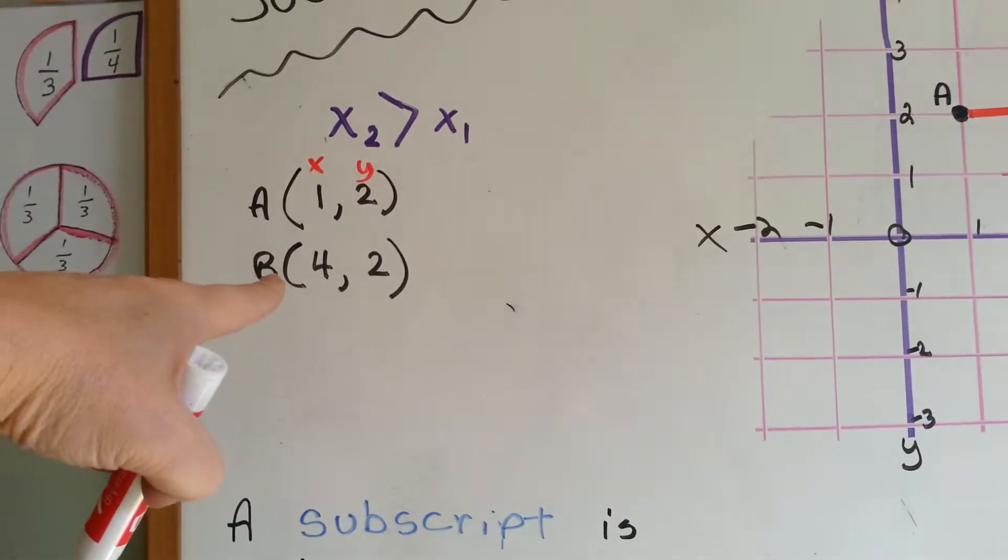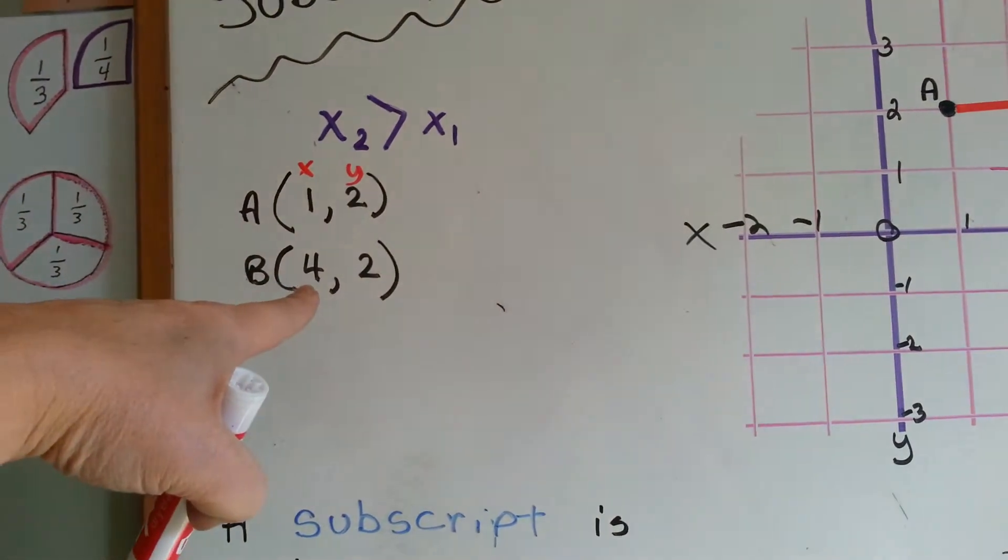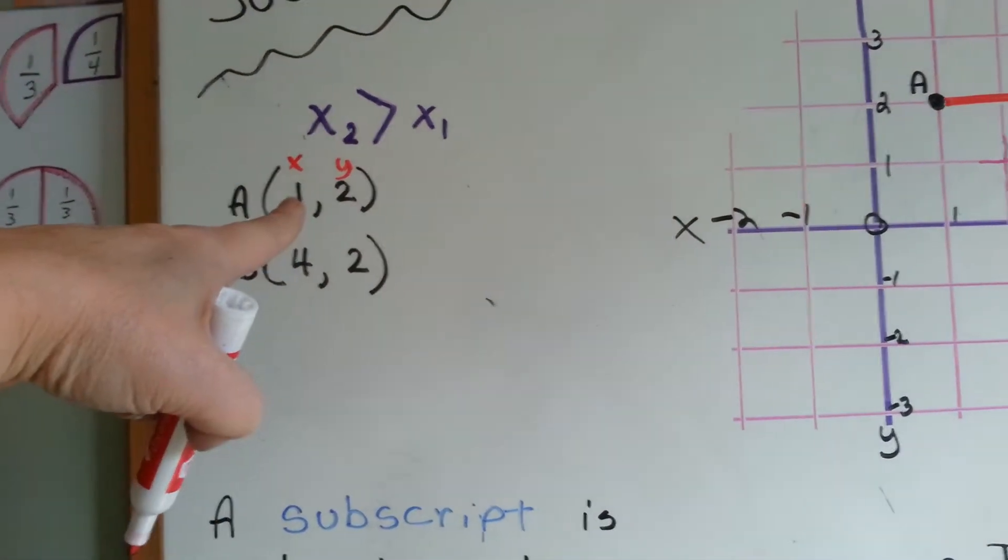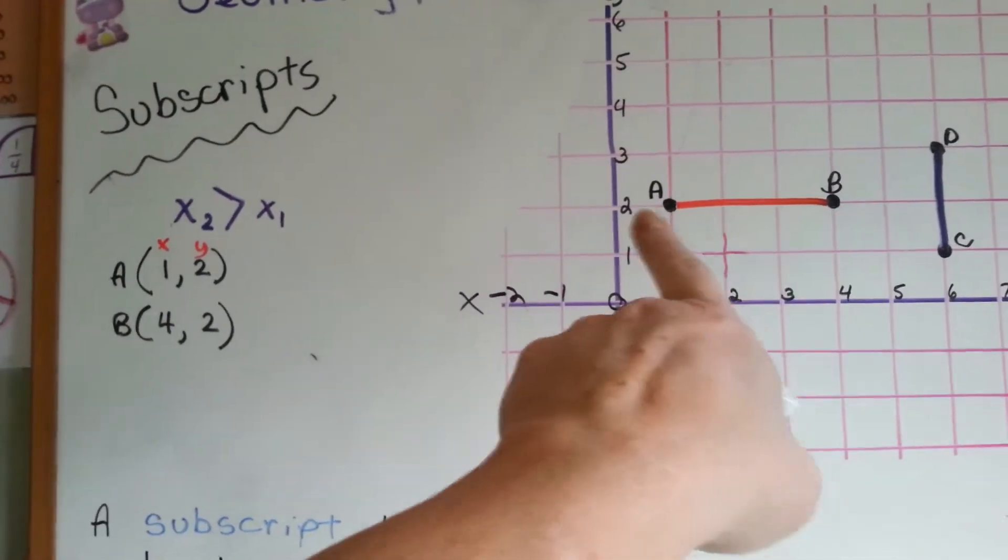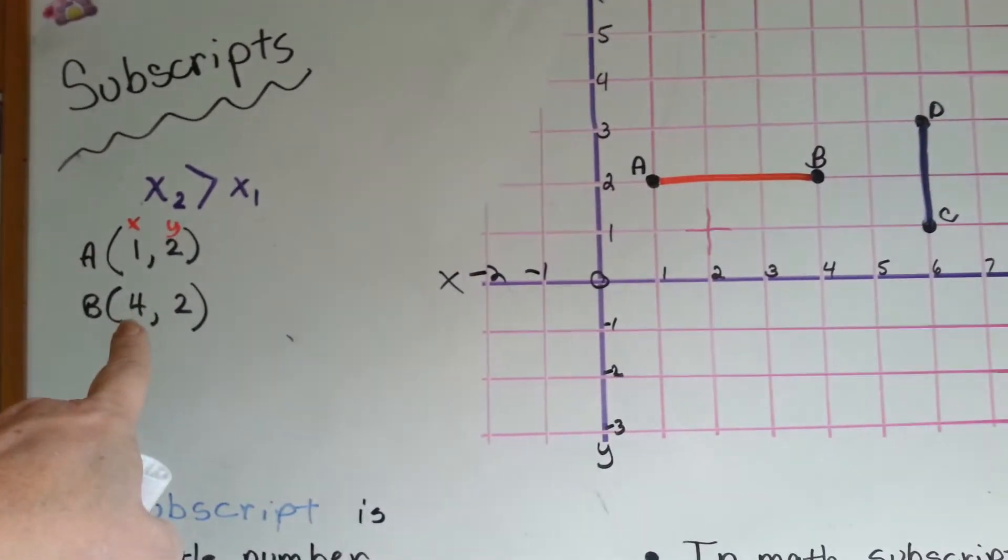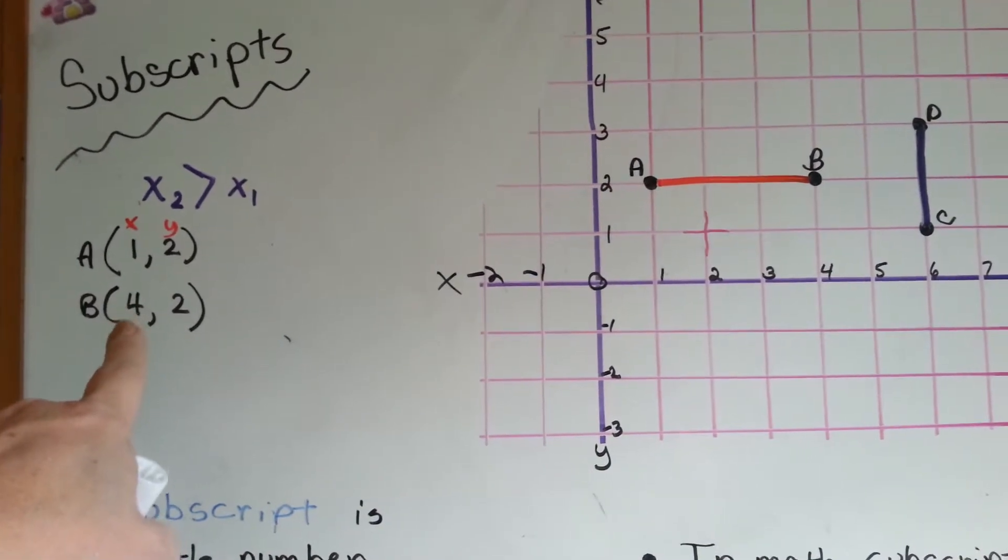So in the x's, point B has an x of 4 where point A only has an x of 1. Now, it would be drawn as this red line here and the B is larger.